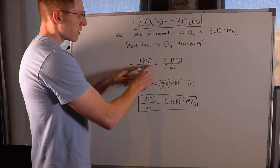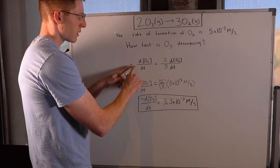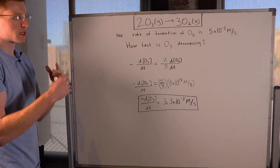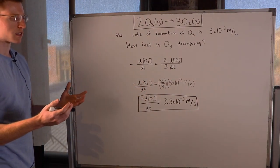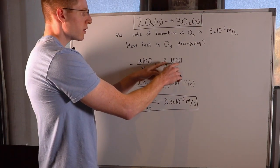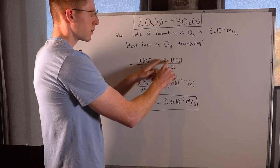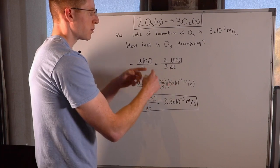So we know that the change in O3's concentration per change in time can be written like this, and I put a negative sign in front of it because it's a reactant—it's disappearing. Its change in concentration per change in time is negative, and that's going to equal the change in O2's concentration per change in time times some coefficient that I have to put in front of it.